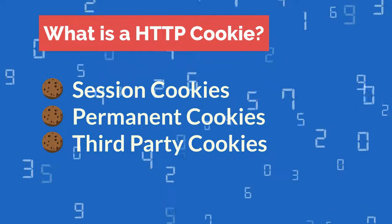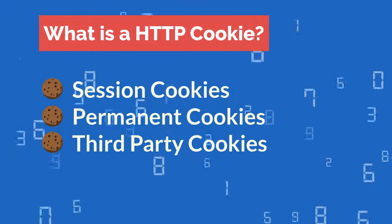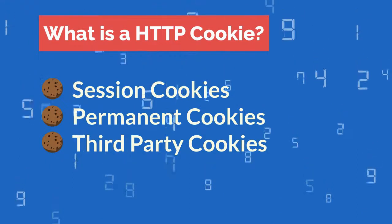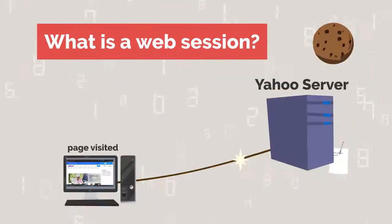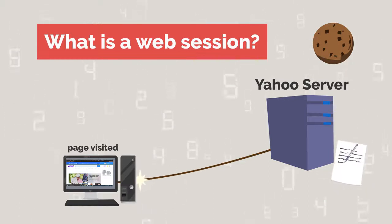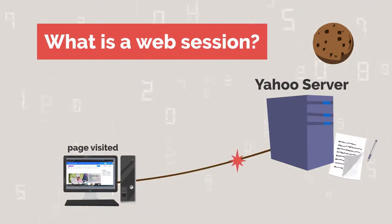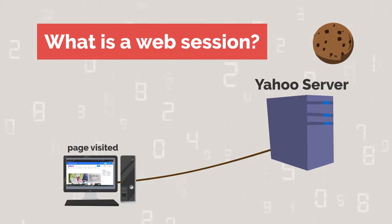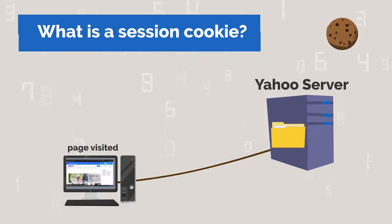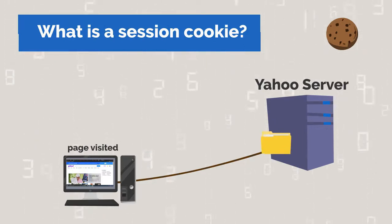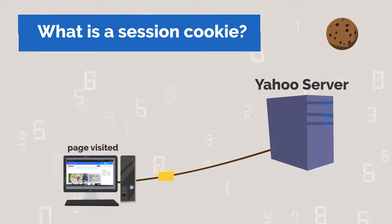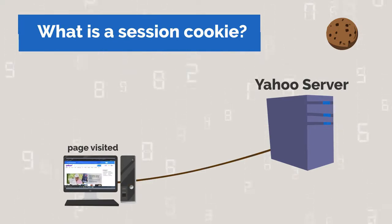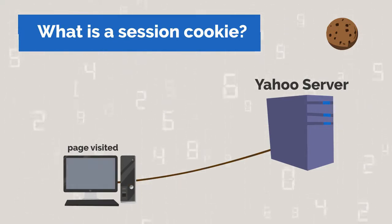If a cookie doesn't have an expiry date associated with it, it is always considered to be a session cookie. A web session is a web server record of a series of contiguous actions by a visitor on an individual website within a given timeframe that is stored on a web server. A session cookie is a file containing an identifier that a website server sends to a browser for temporary use during a limited timeframe. Session cookies expire once you log off or close the browser. They are only stored temporarily and are destroyed after leaving the page.